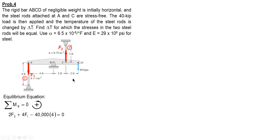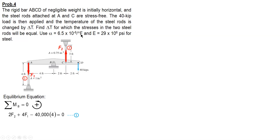For units, set your mind that force will be expressed in pounds, and distances, area, and all measurements will be expressed in inches. So the 40 kips is expressed as 40,000 pounds. This will be our Equation 1. Next, the problem condition is that the stresses in the two steel rods will be equal.